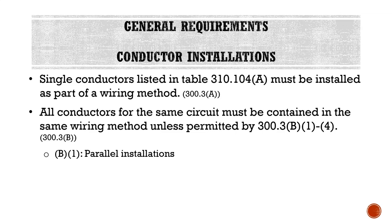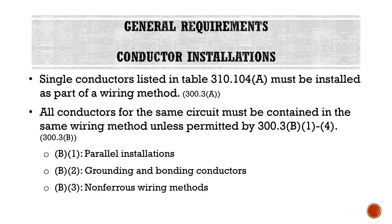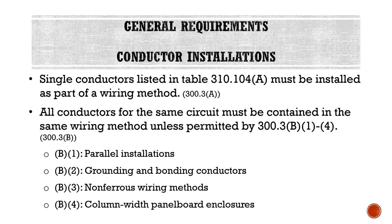The only exceptions to this rule are 300.3B1 through 4, which are for parallel installations — where multiple cables or raceways feed the same piece of equipment. For grounding and bonding conductors, there are exceptions that allow running them on the outside of a cable or conductor. For non-ferrous wiring methods such as PVC conduit or NM cable, there are some specific exceptions, as well as exceptions for column-width panelboard enclosures in regards to the 300.3B rule.